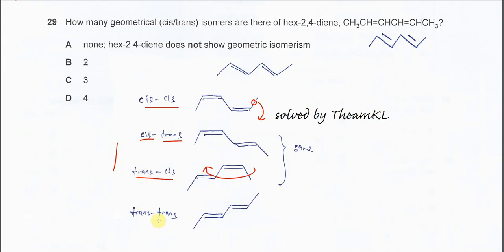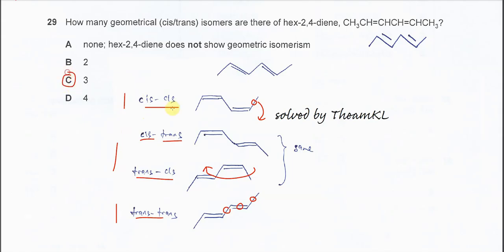Trans-trans can also be formed. For the first double bond, the larger groups are on different sides — trans configuration. For the second double bond, the two larger groups are also on different sides — also trans configuration. So this isomer is trans-trans. The total number of isomers is three, not four. That's all, thank you.